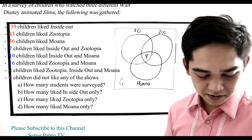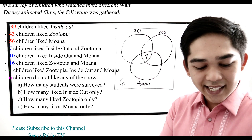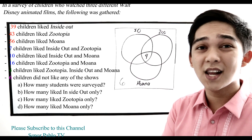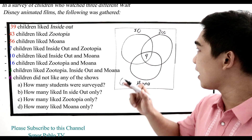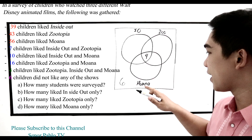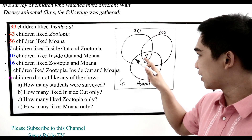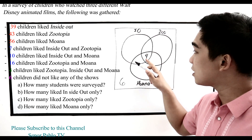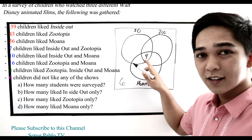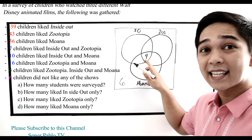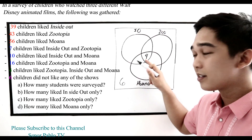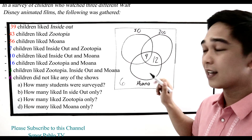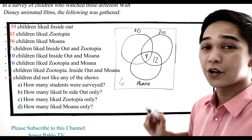Next, 16 children like Zootopia and Moana. Since 4 are already in the center intersection, we subtract: 16 minus 4 equals 12. So we write 12 in the Zootopia-and-Moana region (excluding the triple intersection).